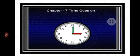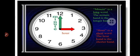Good morning students. Today we will continue chapter number 7 — time goes on. This is the clock. It has two hands: hour and minute. And one more hand is there, that is the second hand.